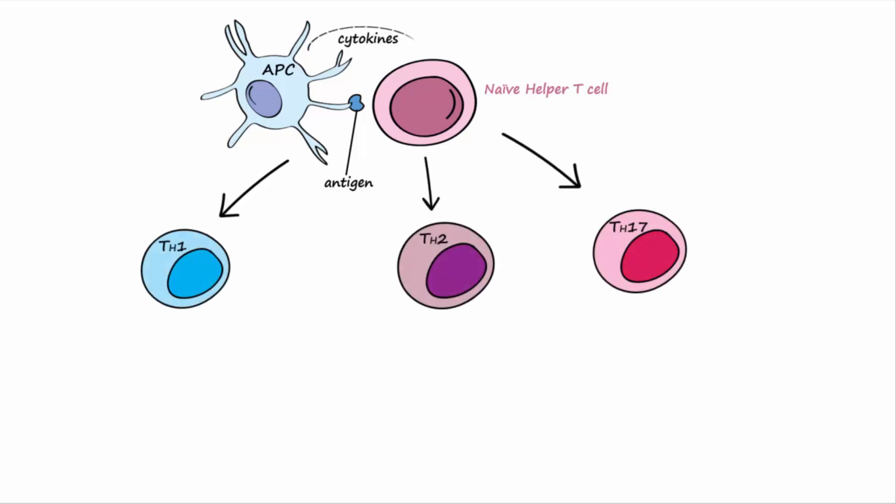When a naive helper T cell encounters a presented antigen in peripheral lymphoid tissue it becomes activated and differentiates into a particular subtype of effector helper T cell, determined by the type of cytokine released by the antigen presenting cell.